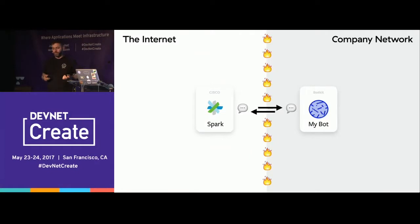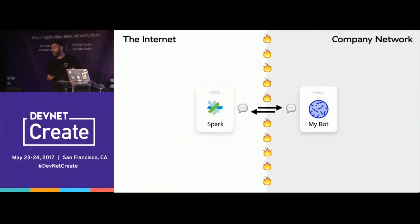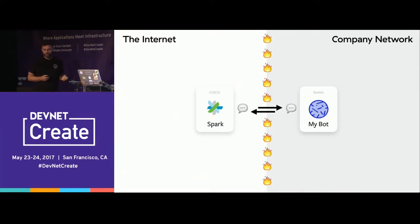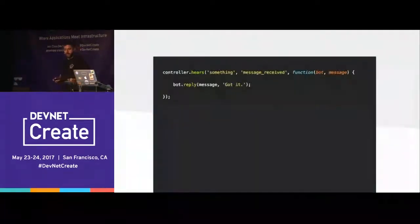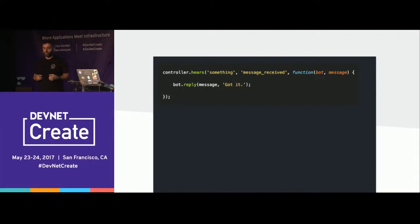Here's a very simple example. You have a controller object, which is the bot's brain, and then there's a function called 'hears.' That tells the bot to listen for certain keywords, phrases, patterns, regular expressions, or intents. In this case, it's just listening for the phrase 'something.' And then there's a function called 'reply' that sends the message back. Very simple. You're not dealing with APIs or protocols. This could be an Alexa skill, a Slack bot, or a Facebook bot — it doesn't really matter.